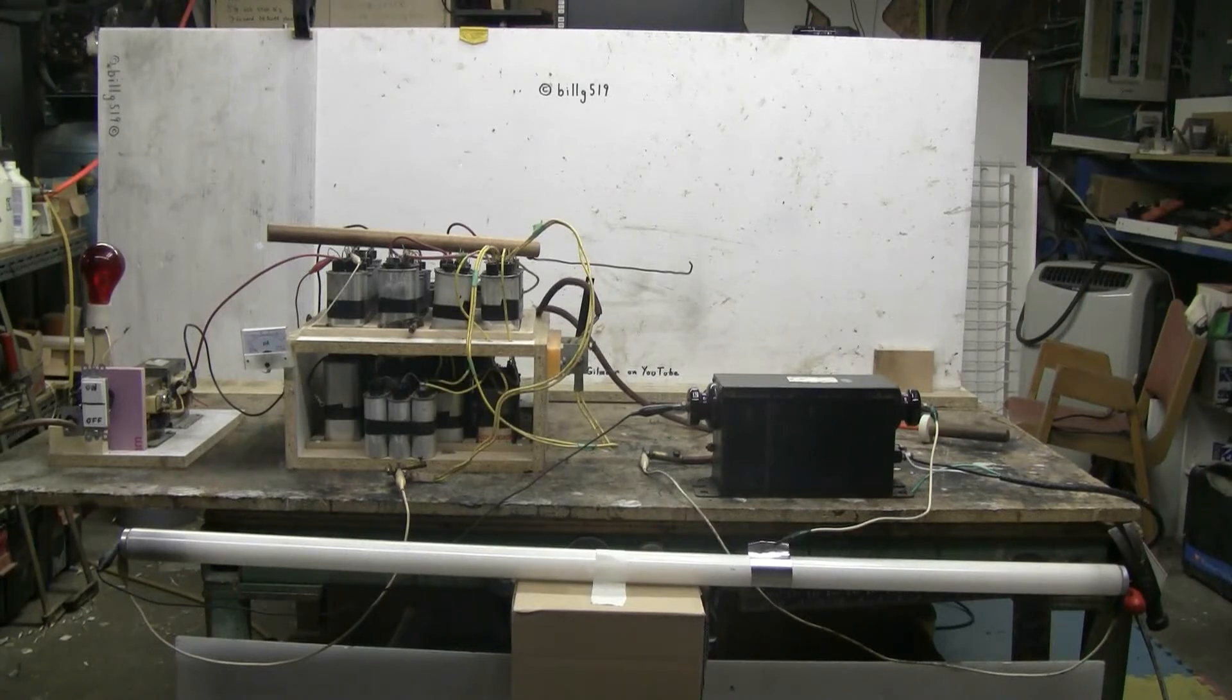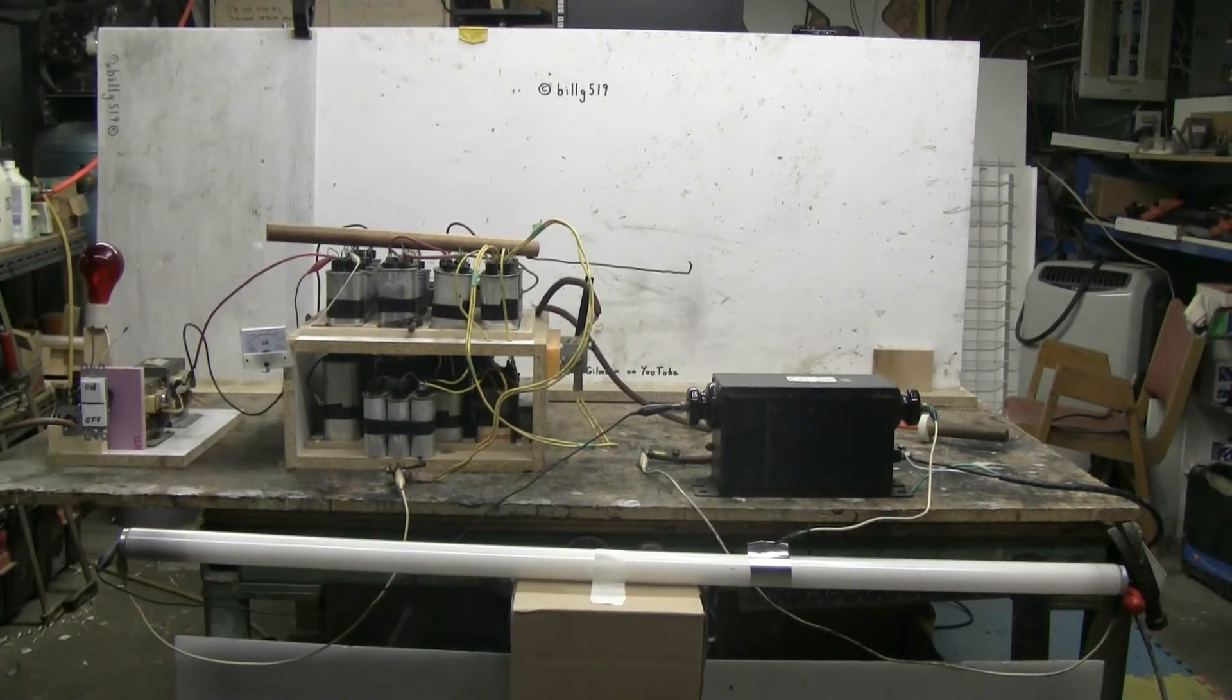The cap bank will then be dumped, 70 microfarads at 6400 volts, into the pre-ionized fluorescent tube. Let's see what if anything happens.